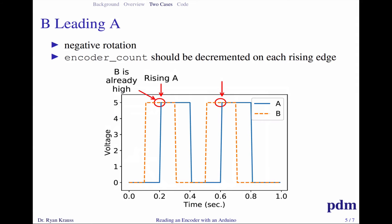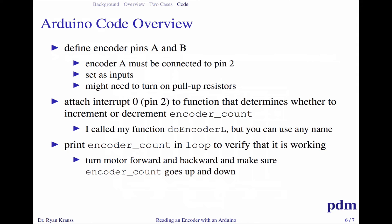Okay, so that's the conceptual background. Let's talk a little bit more about the code, and then I'll show you my code. You're going to need to define an A and a B pin that you're going to connect those encoder signals to.